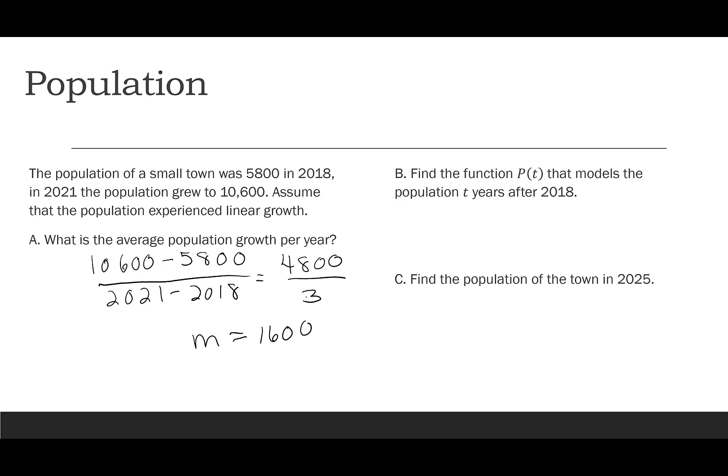Now we're going to find the function P(t) that models the population t years after 2018. So P(t) is going to be our slope, 1,600 times t to show us each year. Plus we want to look at where did we start. We started at 5,800. Part C says find the population of the town in 2025. Most important thing to do here is to look at the time. So the time 2025, I need to subtract 2018 to see this is seven years after our model began. So when we find P(7), which is 1,600 times 7 plus 5,800, we can see that the population is now 17,000.